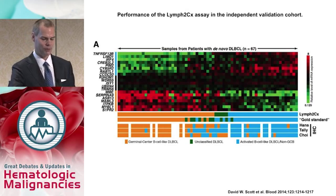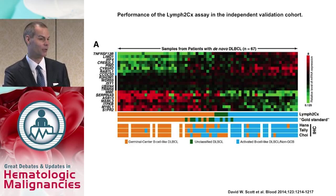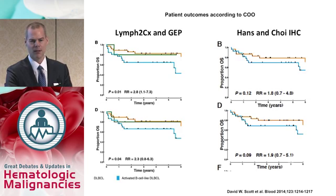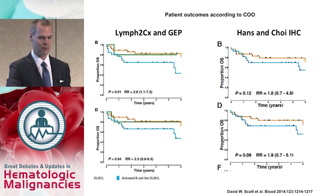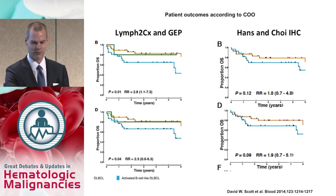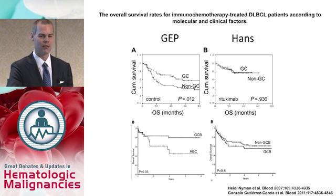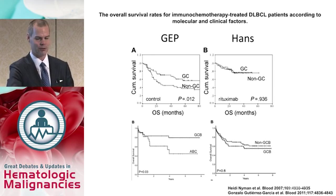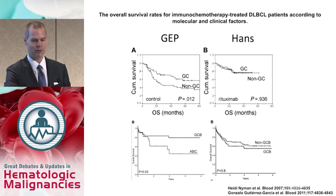IHC tends not to agree well with itself in differentiating ABC from GCB subtypes. A recently published study using nanostring technology, which did correlate very well with GCB/ABC gene expression profiling, did not correlate well with different immunohistochemistry methods. When looking at overall survival, nanostring and gene expression profiling showed a difference, but immunohistochemistry did not. This goes back to 2007 — the Scandinavian study showed gene expression profiling did segregate patients, but immunohistochemistry didn't, and the same was true in the Spanish series.